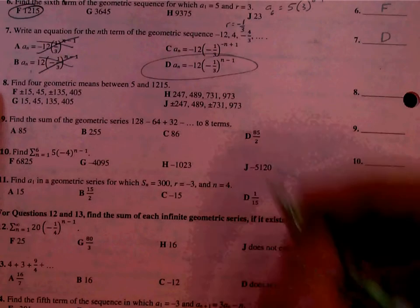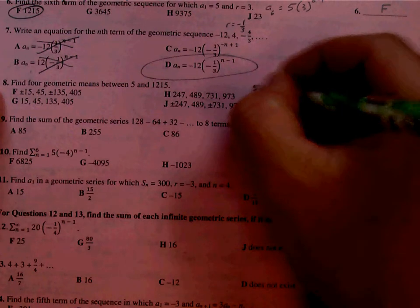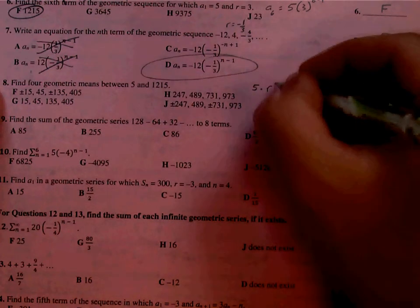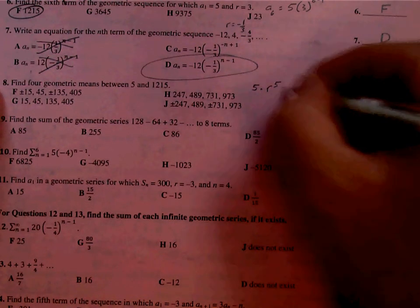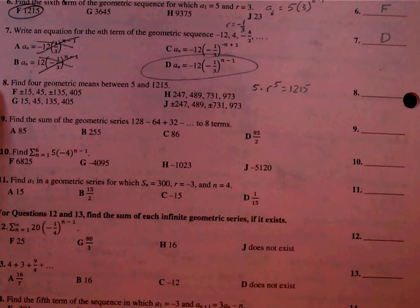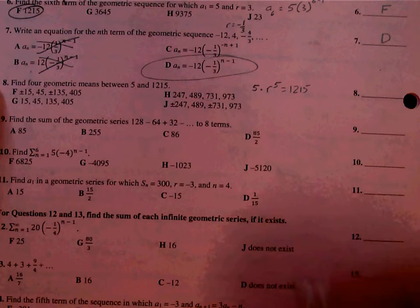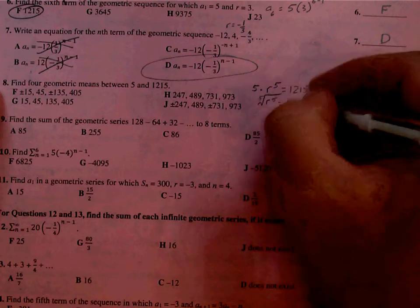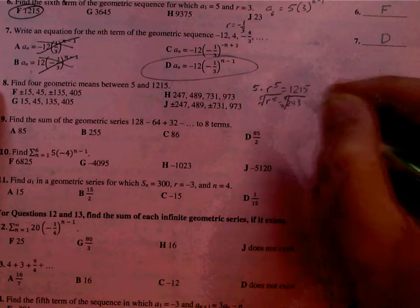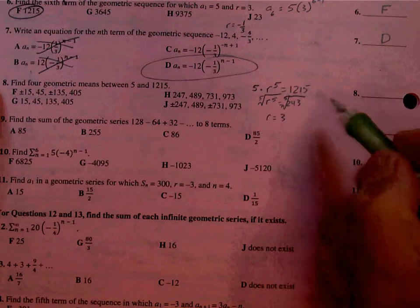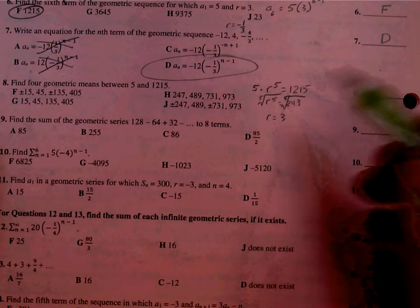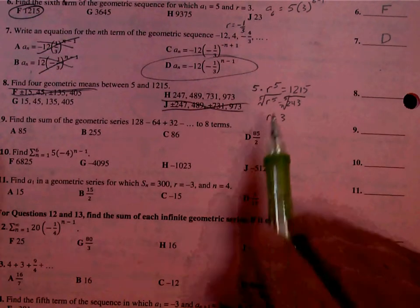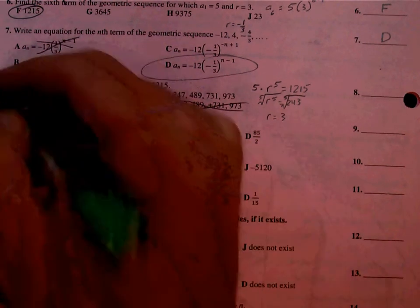Four geometric means between 5 and 1215. So 5 times, since it's geometric means, times R. There's 4 of them, so that means there's going to be 5 steps. So R to the fifth, and we end up at 1215. We're going to solve this. So we start off by taking 1215 divided by 5. We get 243. And then we're going to take the fifth root of that. That would be 3. Since it's an odd root, we do not do plus or minus. So these are not alternating signs. So I can throw out F and J. We're multiplying by 3. So 5 times 3 is 15. Right away, I see that it's G.